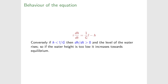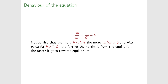This is a stable equilibrium. If you move h away from the equilibrium value, it heads back towards it. We can say more: the further h is from the equilibrium, the faster it returns. If h is less than i-bar/G, the smaller h is, the bigger dh/dt is and the faster h increases. Conversely, the more h exceeds i-bar/G, the faster it falls back toward equilibrium.